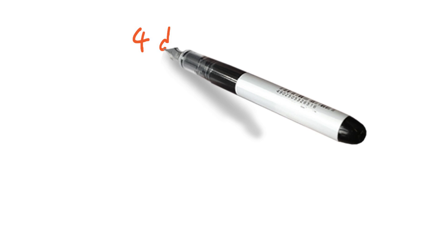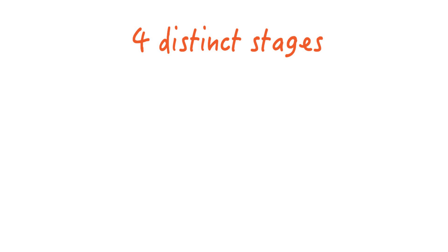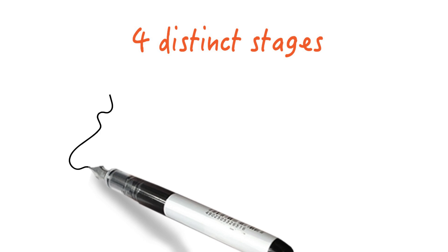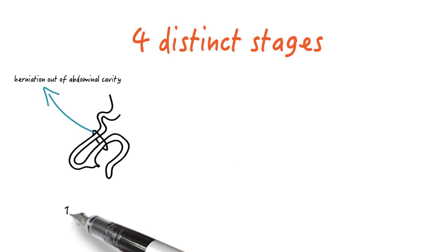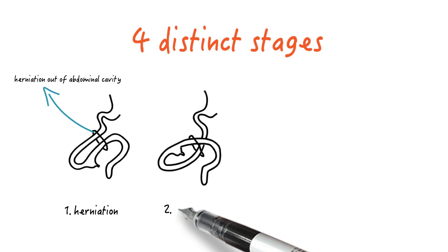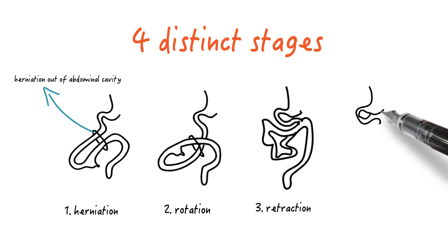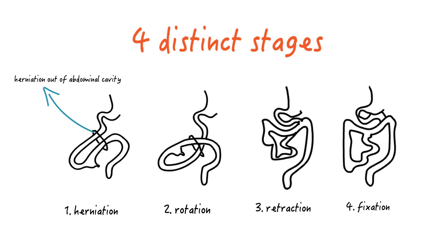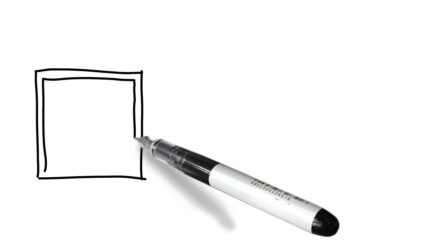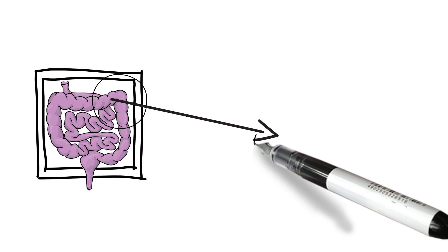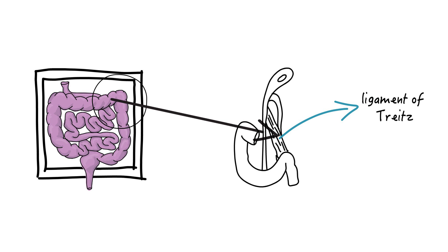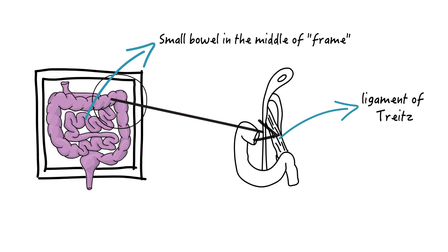The most accepted model of midgut maturation involves four distinct stages: 1. Herniation, 2. Rotation, 3. Retraction, 4. Fixation. At the end of normal rotation, the colon forms a frame, much like a picture frame, with the ligament of Treitz fixed just to the left of the vertebral body at the level of the pylorus, and small bowel in the middle of the frame with the appendix on the right side of the abdomen as the cecum is fixed there.